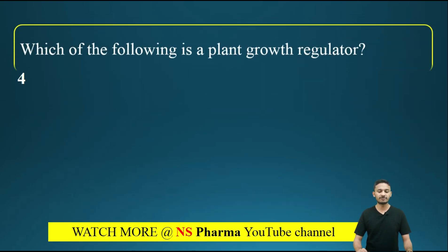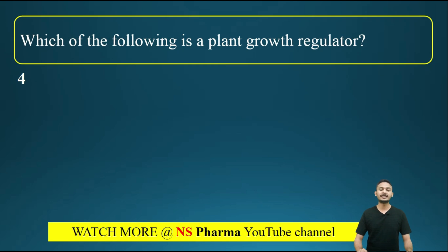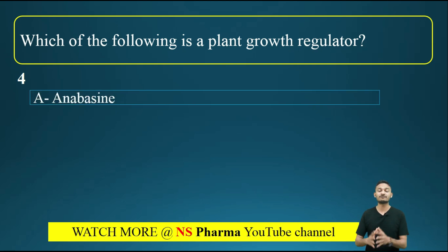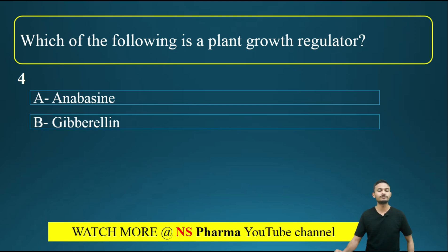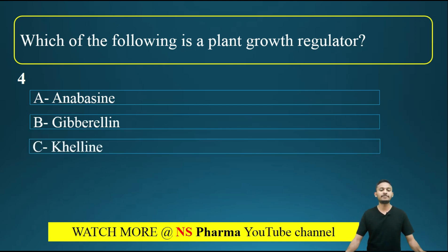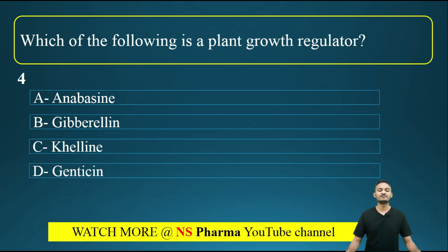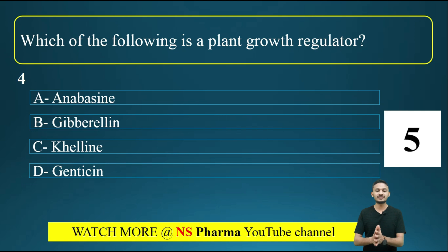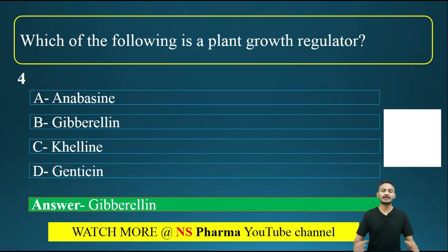Now moving to question number 4: which of the following is a plant growth regulator? Options are: option A, abscissin; option B, gibberellin; option C, khellin; option D, gentisic acid. The correct answer is option B, that is gibberellin. Gibberellin is a plant growth regulator.